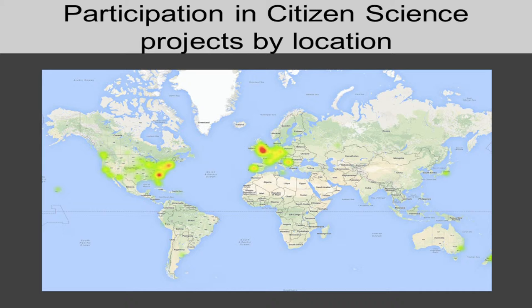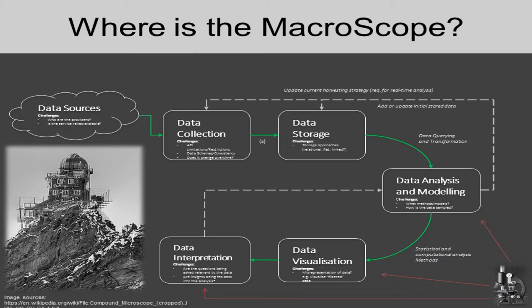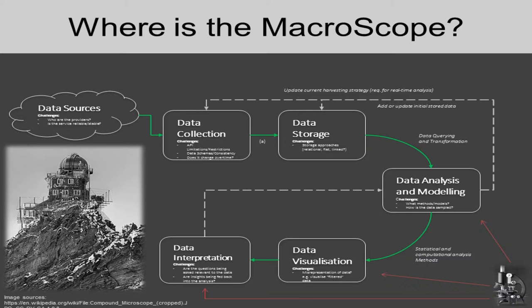You can put that on a map to show where users are coming from. We also apply a method concerned with temporal patterns of information co-occurrence — a particular way of tracing cascades of information independent from the social network. This is applied to data in web observatories we can access through dedicated infrastructure. And the macroscope is in data analysis and modeling, visualization, and data interpretation.